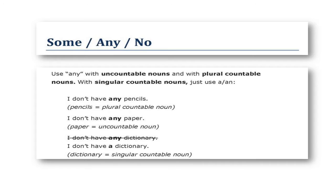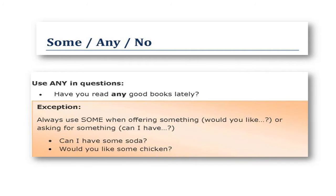I don't have any pencils. Pencils is a plural countable noun. I don't have any paper. Paper is an uncountable noun. I don't have any dictionary is incorrect. The correct sentence is: I don't have a dictionary. Dictionary is a singular countable noun.